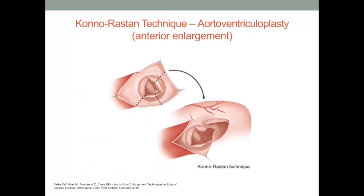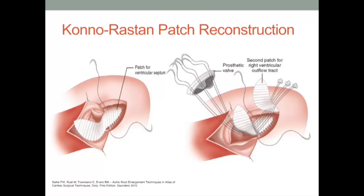In the anterior enlarging technique of the Konno-Rastan aortoventriculoplasty, the aortic root is mobilized by careful dissection anteriorly between the right coronary sinus and the pulmonary artery. This dissection is leftward of the right coronary artery and carried down to the level of the aortic annulus. The aortic root is then enlarged by an incision through the right coronary portion of the aortic annulus, near the commissure between the right and left coronary cusps. This incision may be deepened into the interventricular septum, and a matching incision is thus made on the right ventricular free wall to enlarge the right ventricular outflow tract.